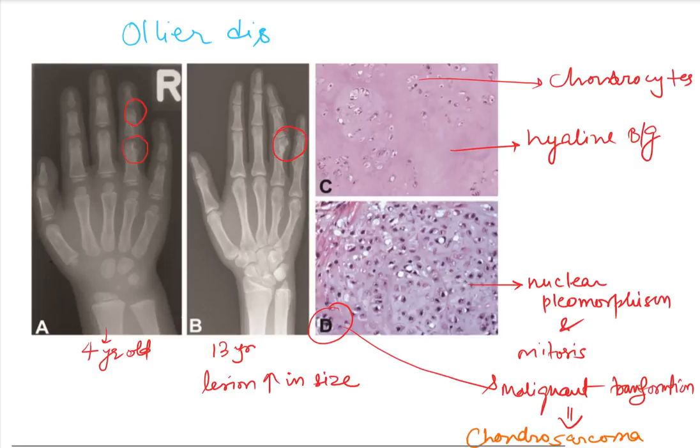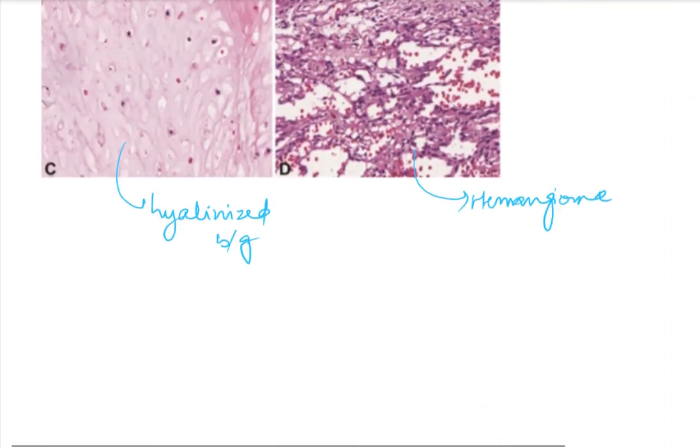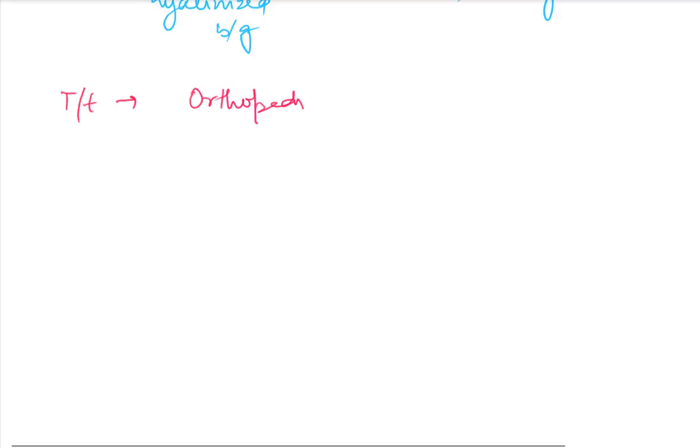The earlier case defines Ollier disease. So we have seen that the diagnosis is made with the help of radiographic appearance, microscopy, and clinical features. Regarding treatment, orthopedic surgical intervention is required.